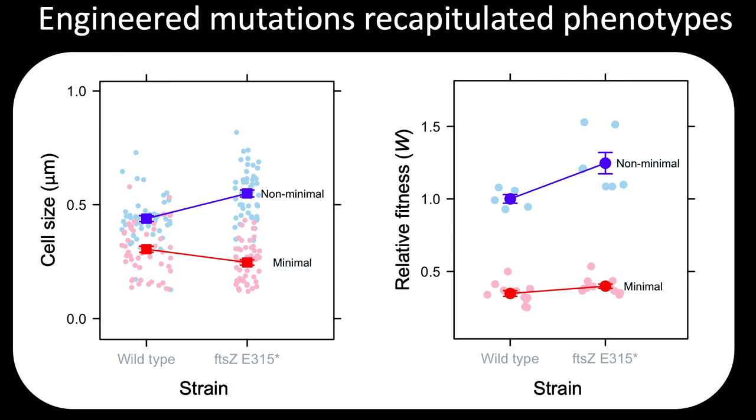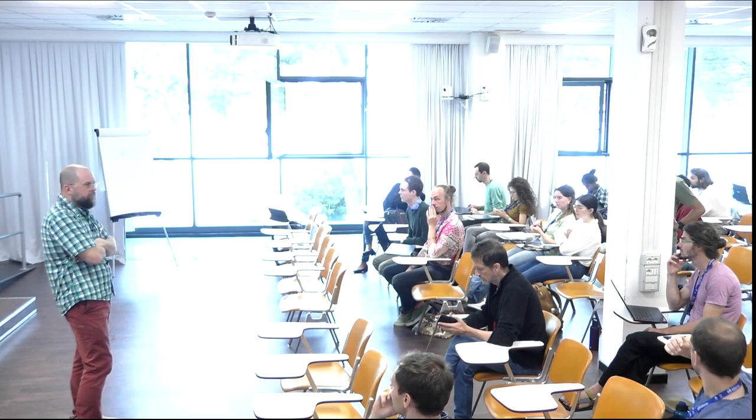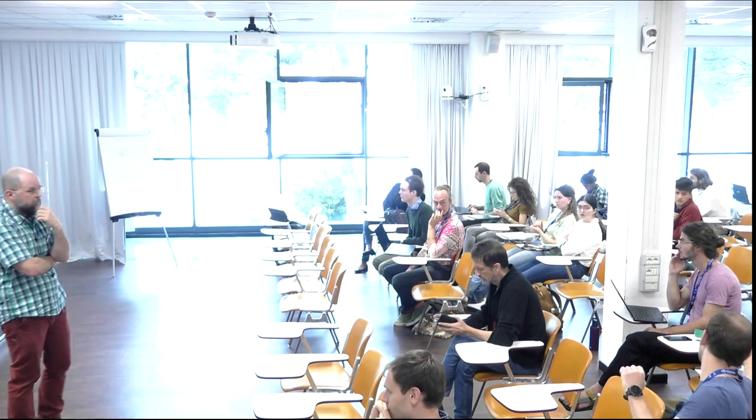Discussion about fitness assay: growth rate and maximum growth rate are essentially what's being used for fitness. The head-to-head competition experiments capture something slightly different, but growth rate kinetics measurements match up. The competition assay measures the ability of experimental strains to increase in frequency relative to a cherry-labeled reference strain over one day. Discussion also touches on media conditions: these organisms require expensive media with fetal calf serum, supplying everything they need to grow since they lack the biosynthetic genes. Last year, JCVI published a paper that includes a defined media, which could be important for flux balance models and simulating mutations.